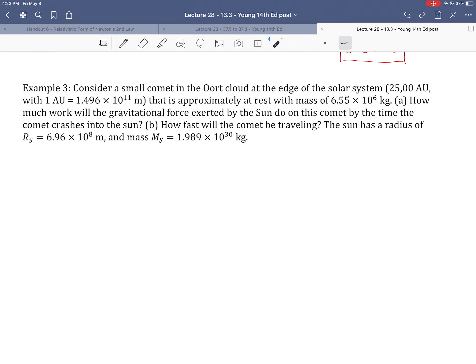An astronomical unit is about 0.15 trillion meters, or 1.5 times 10^11 meters. It's at rest, approximately at rest, sort of suspended in deep space, solar system deep space. And it's got a mass of about 6.5 million kilograms.